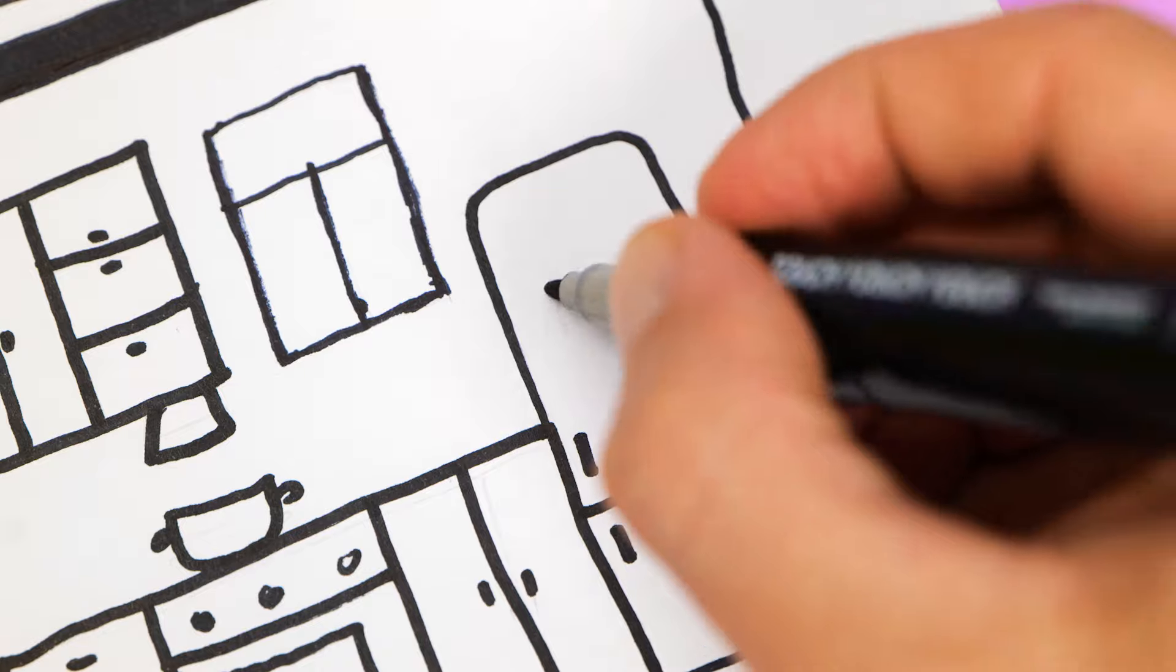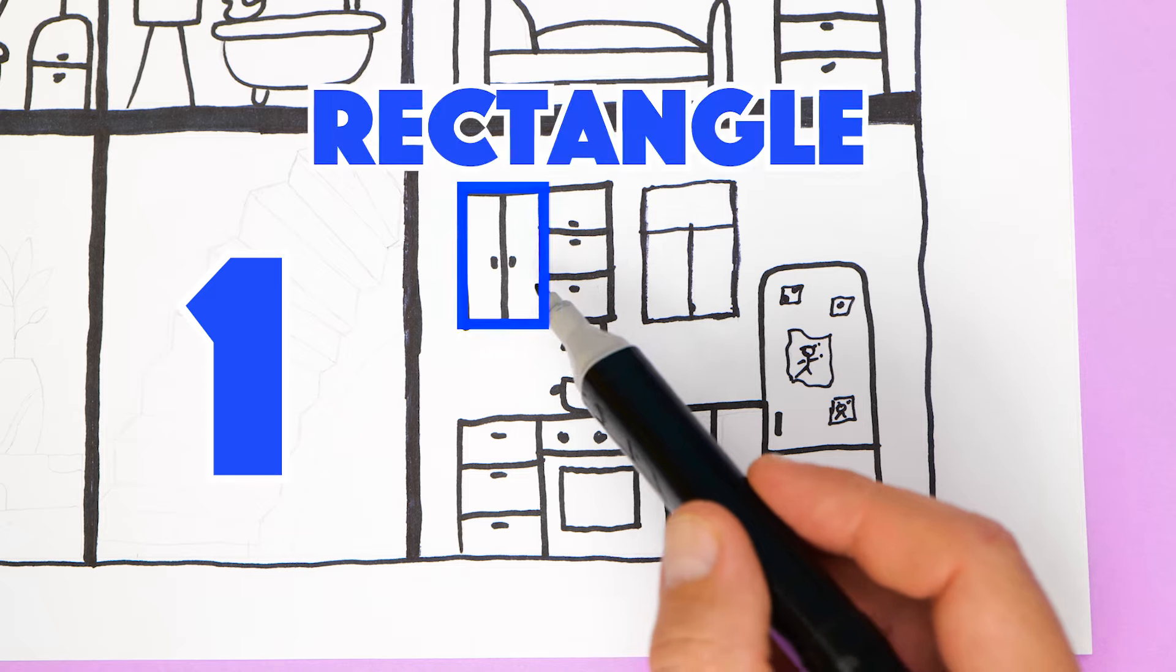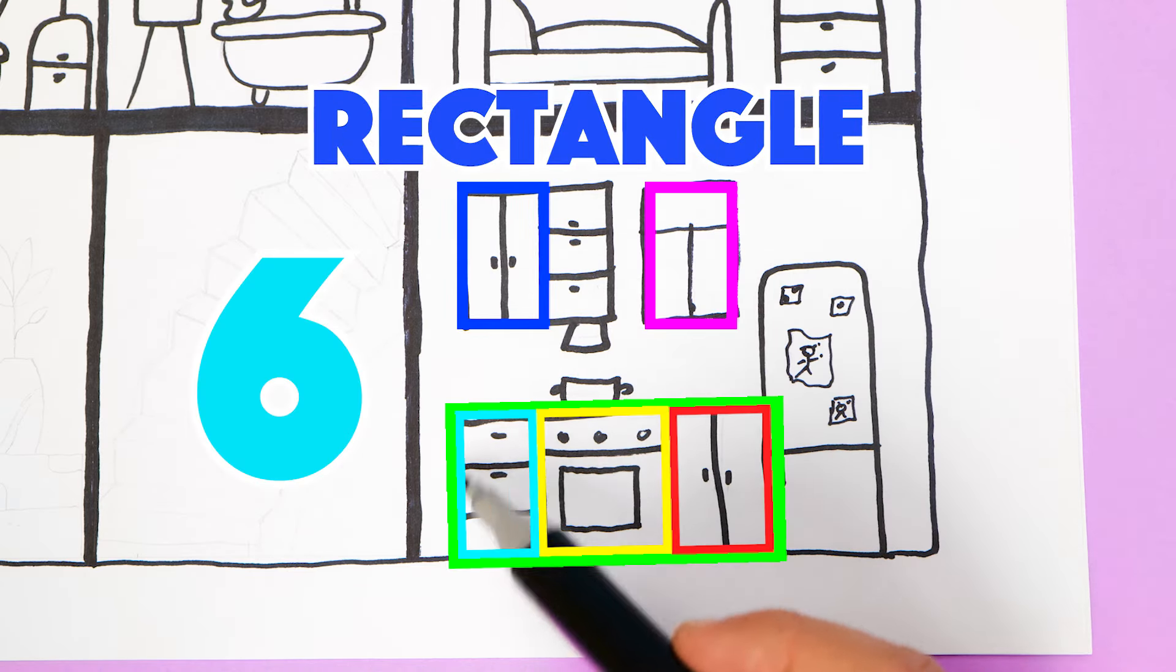Whoa! We almost forgot the most important thing. A refrigerator. Okay, are you ready to count shapes here? One, two, three, four, five, six rectangles.